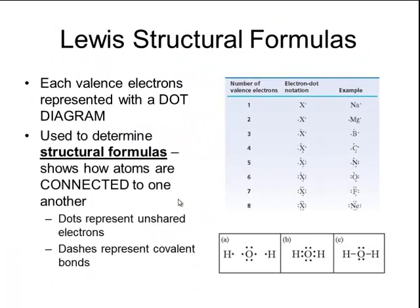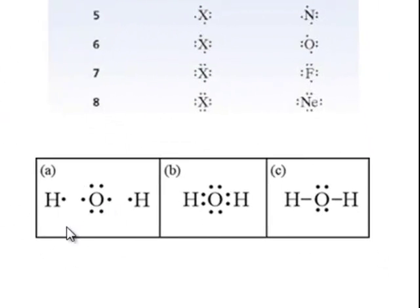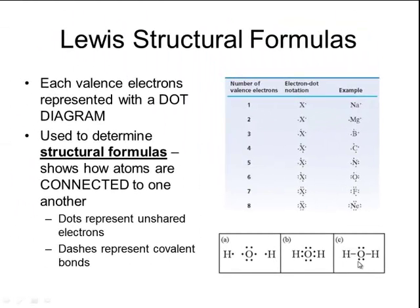We then take these different dot diagrams and combine them together to make a Lewis structural formula. The structural formula shows how the atoms are connected to one another using dots and dashes. For example, for a water molecule, H2O, each hydrogen atom has one valence electron because it is in group one, and an oxygen atom has six valence electrons because it is in group 16. We can combine those dot diagrams together to form a Lewis structure made up of dots and dashes, where the dashes represent the covalent bonds and the dots on the top and bottom represent the unshared electrons.